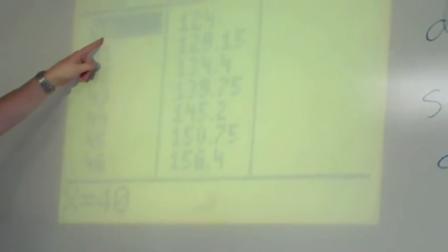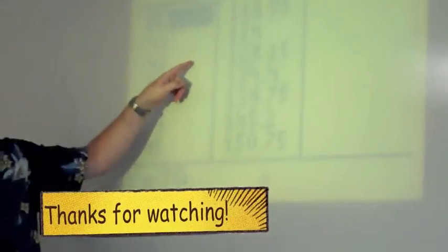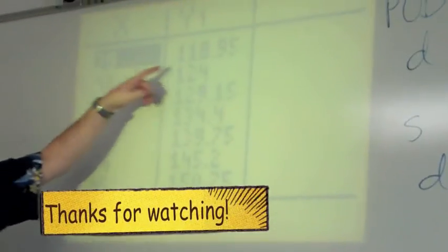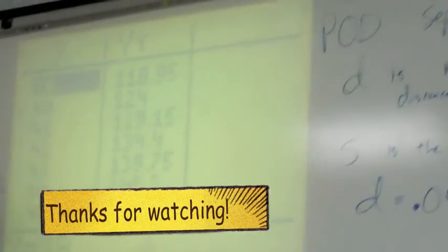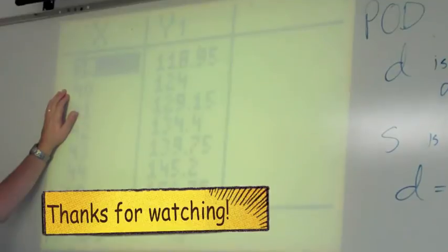And go back to the table. Now I can see that it starts at 40. And here's the same 124 that I had. And if I go up, 39 is 119 feet. So somewhere between 39 and 40 miles an hour. And that's good enough.